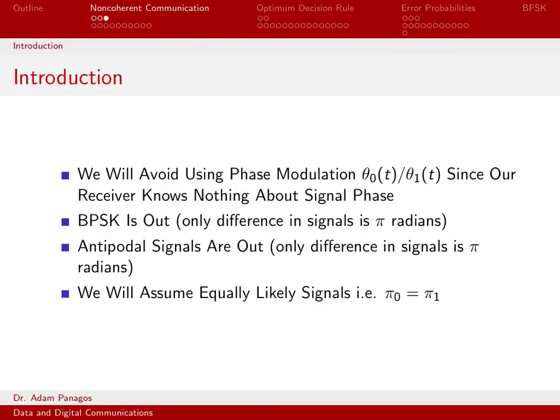Our signal model, S_i(t), allows for both phase modulation and amplitude modulation. But one thing we're going to have to do is we're going to actually have to avoid using phase modulation because at the receiver, we're going to assume that we know nothing about the carrier phase. So if we were to embed information in theta_0(t) or theta_1(t), changing the carrier phase, since our receiver can't estimate the carrier phase, we would essentially lose that information. So we're not going to do any phase modulation when we're working with noncoherent schemes.